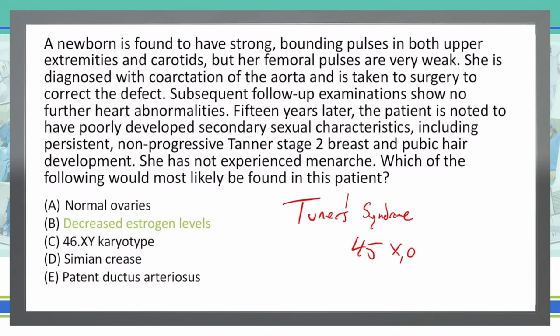If you did a genetic workup, you would see that they have only one X chromosome and no Barr body. They also have poor development of secondary sex characteristics, and because of the rudimentary ovary issue we discussed, they are infertile.